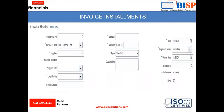When we create an invoice, all the payment related information we give there — like what is the amount, date, payment terms, term date — by giving all this information the invoice installment is determined.